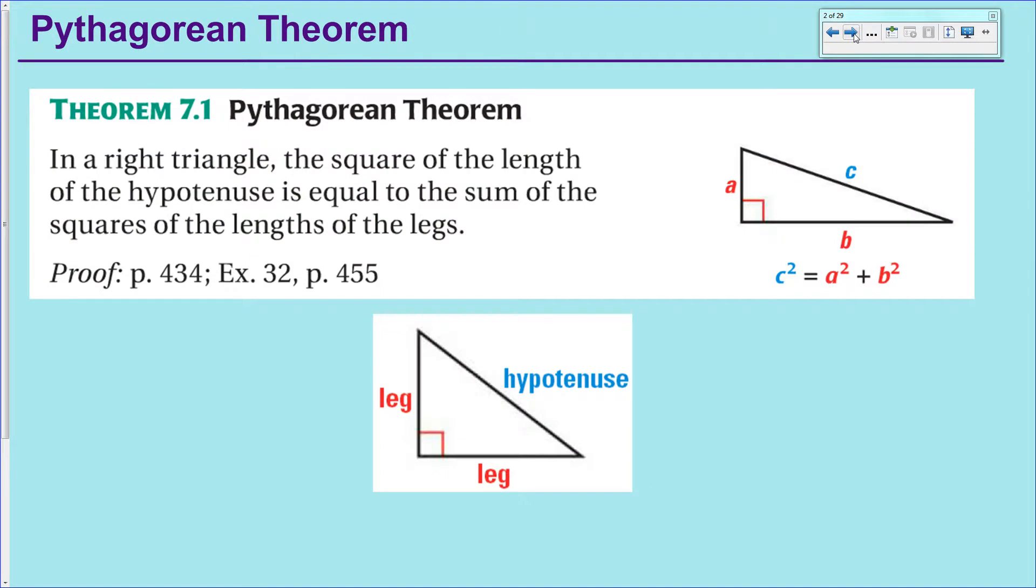If you didn't remember, the Pythagorean Theorem states that if you have every right triangle, then the sum of the squares of the two legs is equal to the hypotenuse squared, or a squared plus b squared equals c squared.